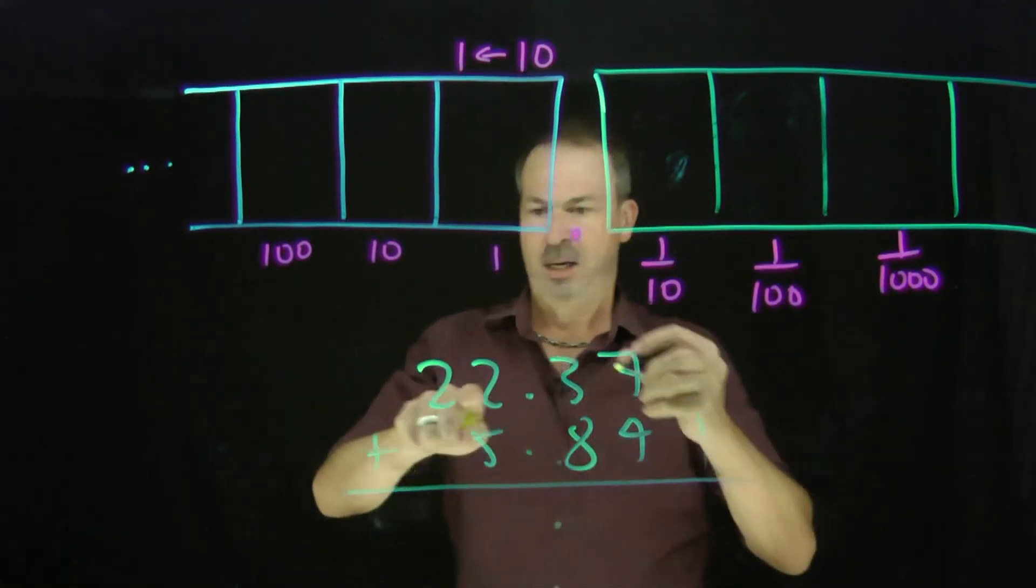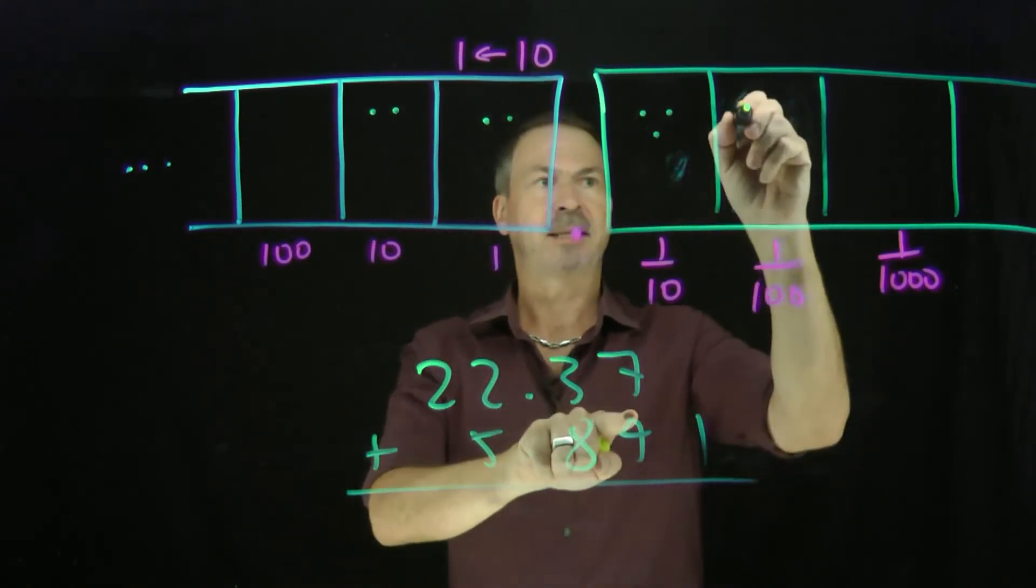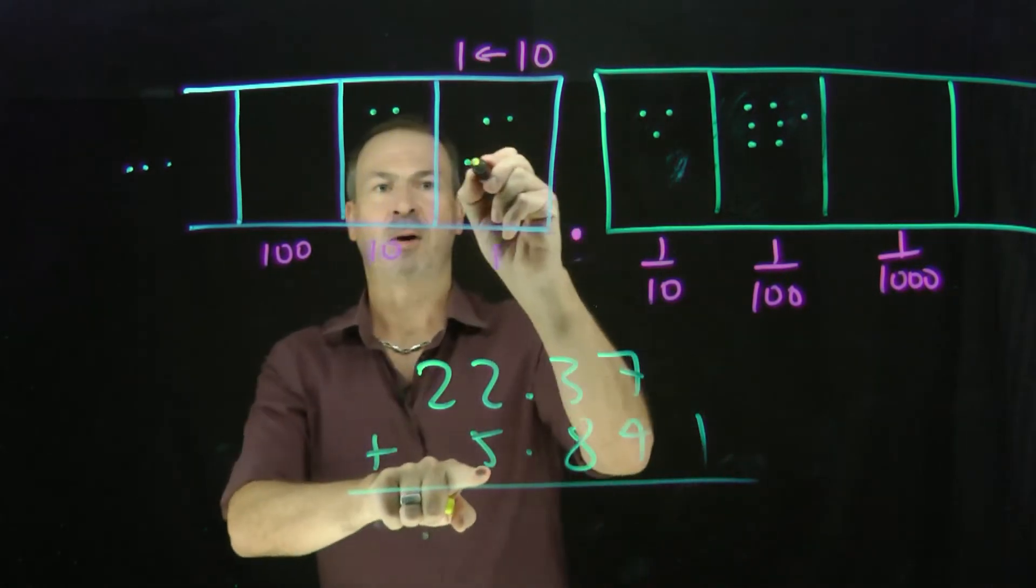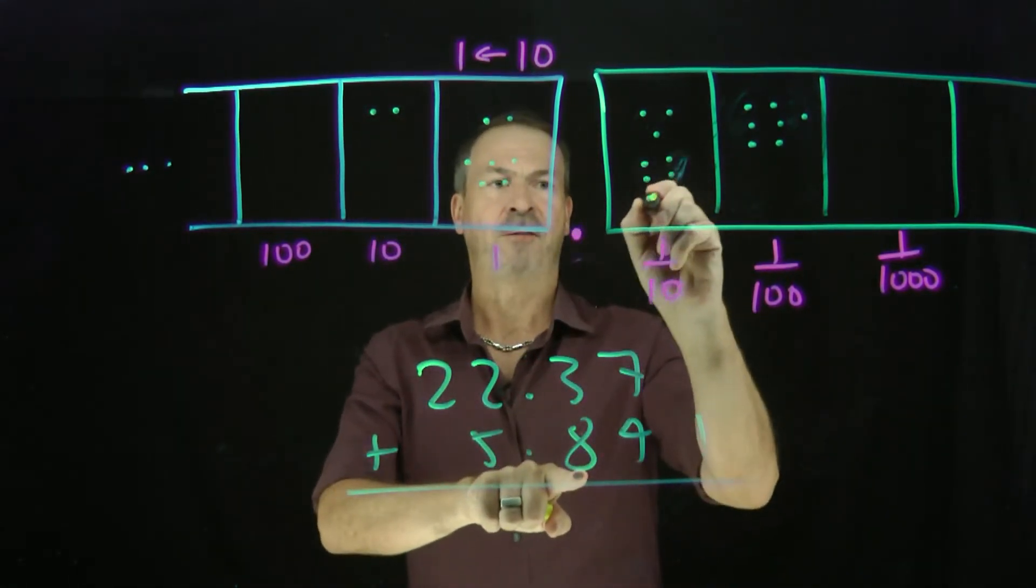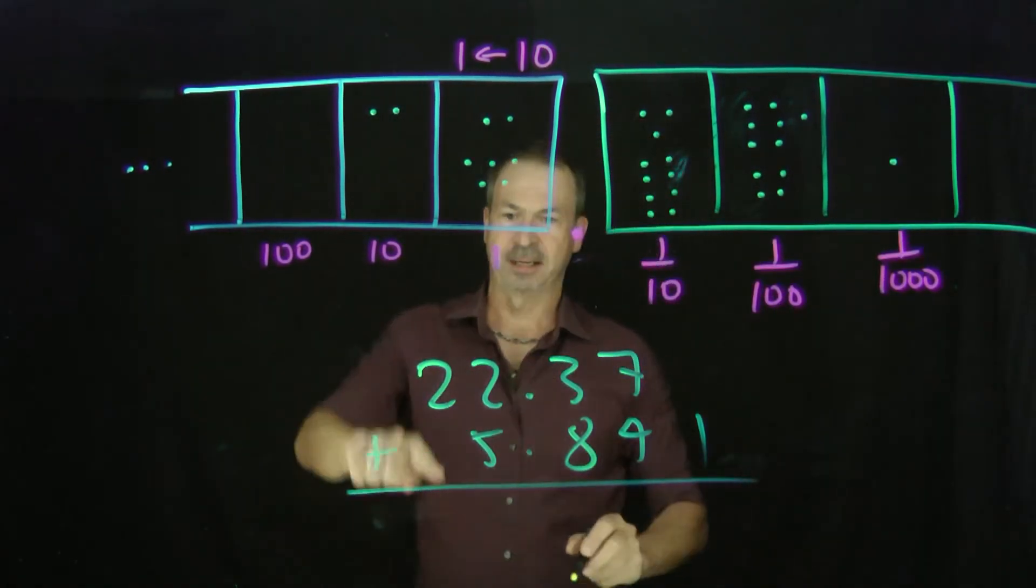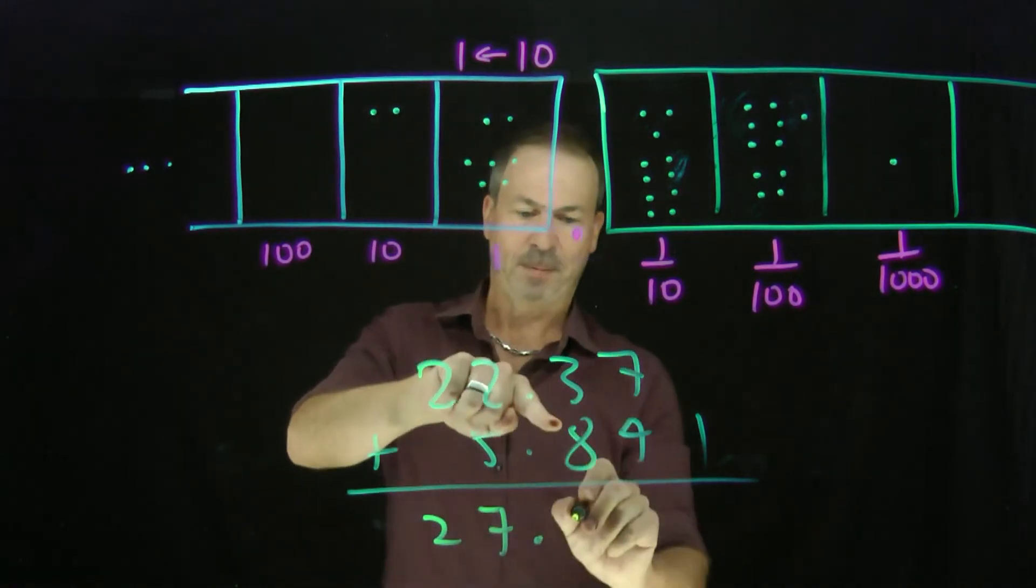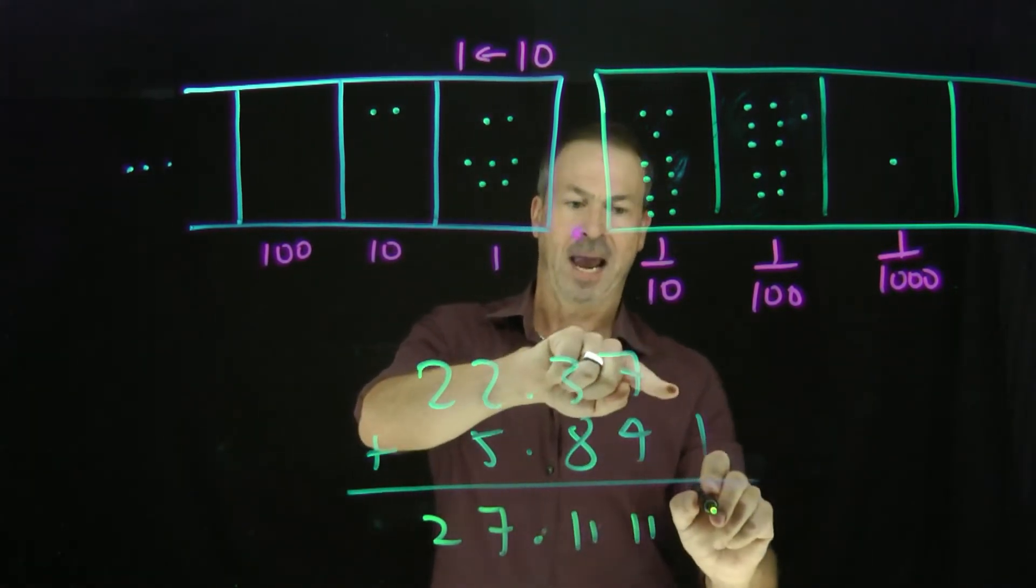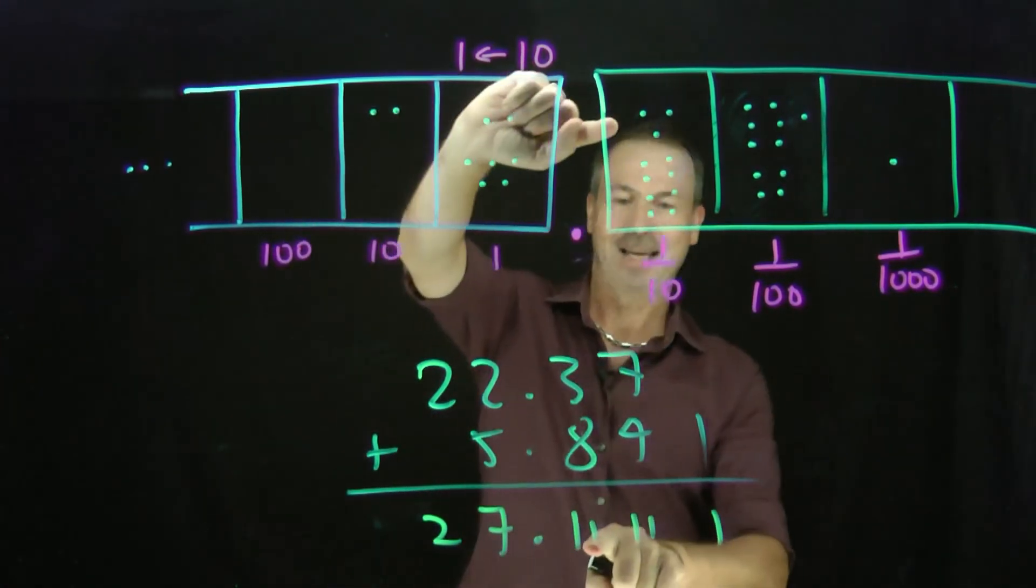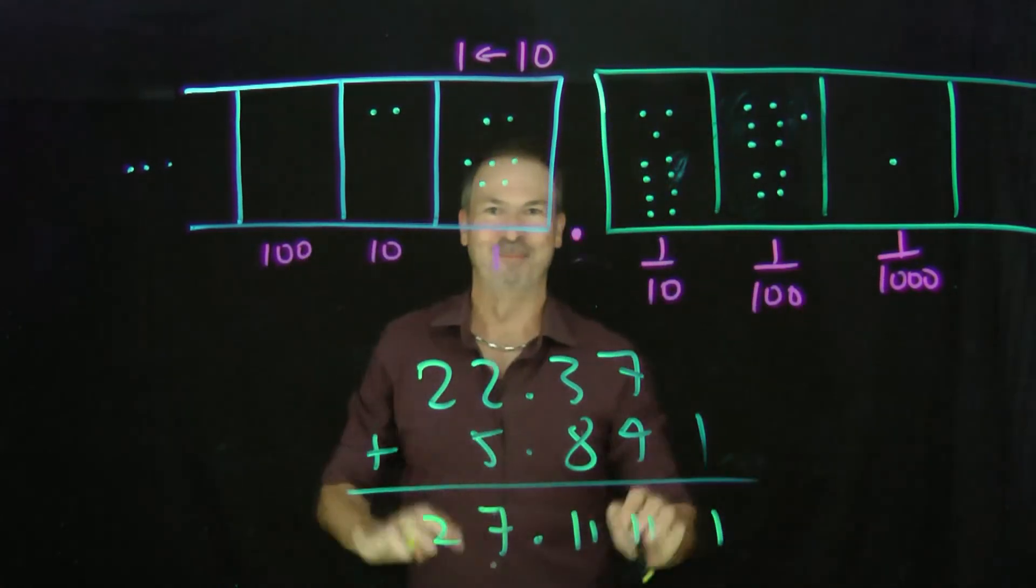I'm saying, please take two tens, two units, three tenths, and seven hundredths. And add to that five ones, eight tenths, four hundredths, and one one-thousandth. So I can see that we get two plus nothing is two, two plus five is seven point, three plus eight is eleven, six plus four is eleven, and nothing but one is one. Great! Two dots, seven dots, eleven dots, eleven dots, one dot. Great! There's the answer: two, seven point, eleven, eleven, one.